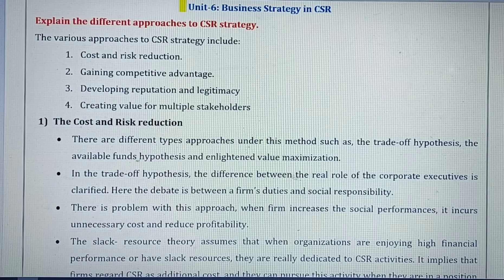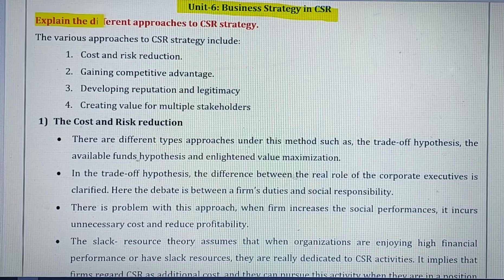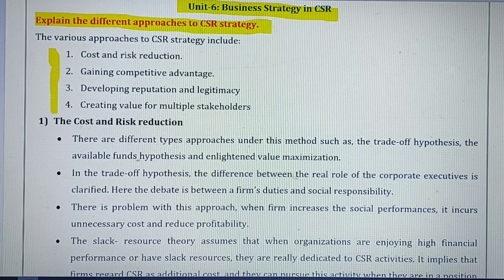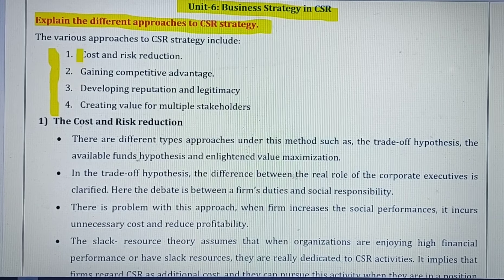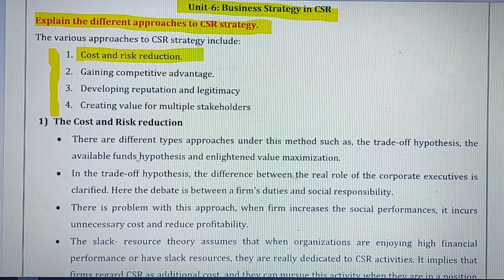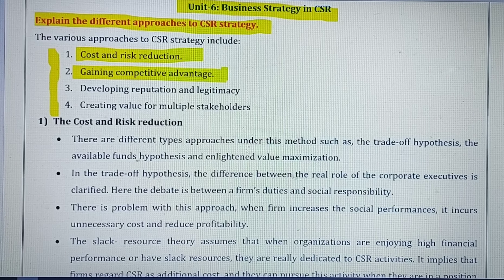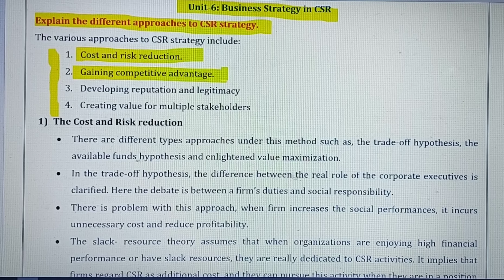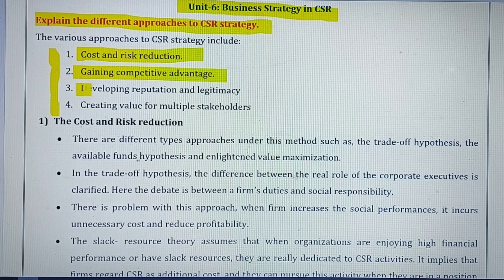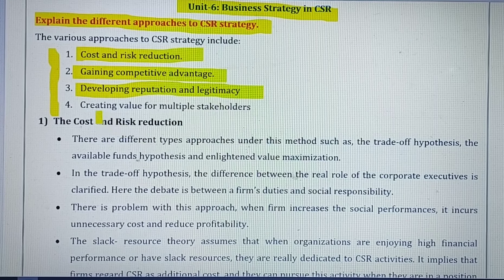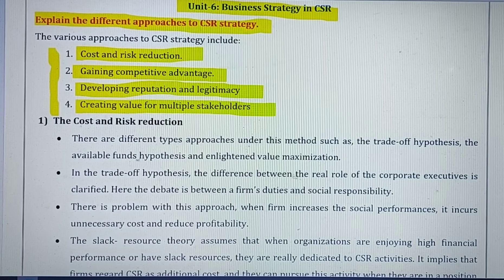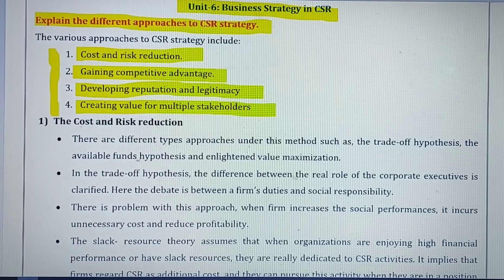Unit 6 is Business Strategy in CSR. Revise this question: explain the different approaches to CSR strategy. There are four types of strategy in your syllabus: first, reducing cost and risk; second, acquiring competitive advantage over competitors; third, developing the reputation and goodwill of the company; and fourth, creating value for stakeholders so they feel more attracted to investing in the company.